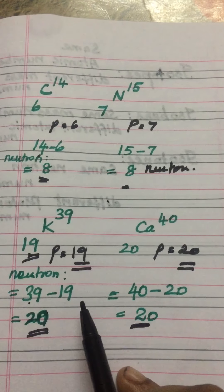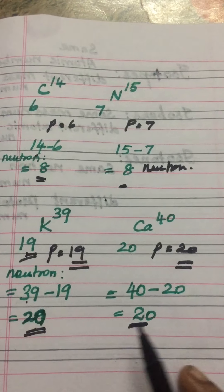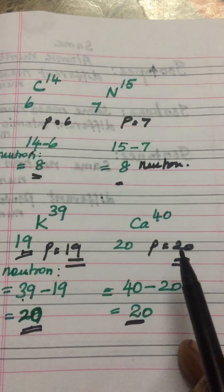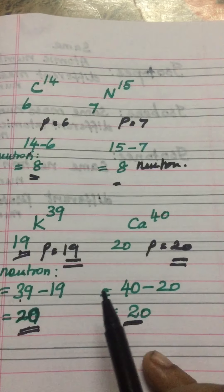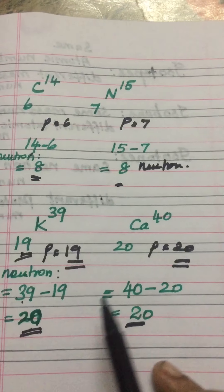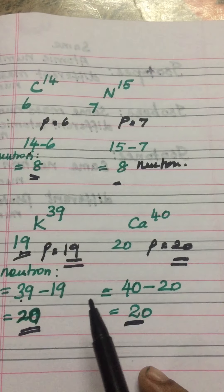So what is isotones? Two different elements that have the same number of neutrons but different numbers of protons are called isotones. These are the examples for isotones.